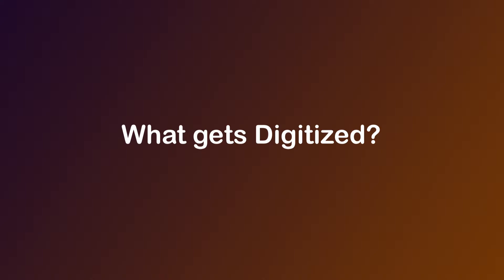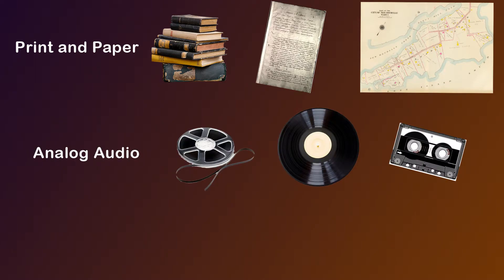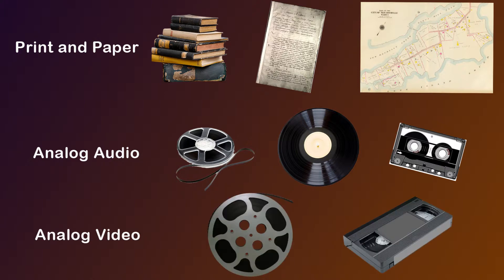With that basic idea about digitization, let's think about what we can digitize. Probably the most familiar example is print and paper media, such as books, manuscripts, and maps. Analog audio media, such as reel-to-reel tapes, vinyl record discs, and cassette tapes. And analog video products, such as 16mm film and VHS video cassettes.